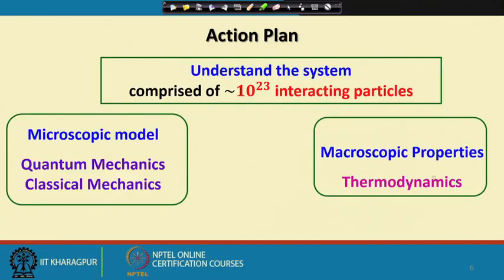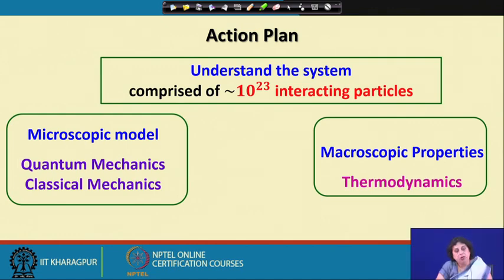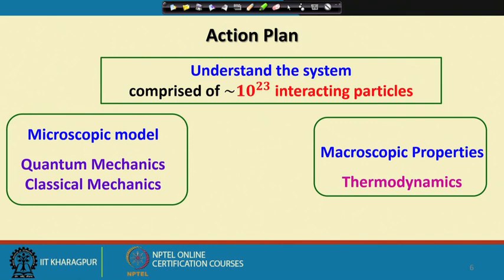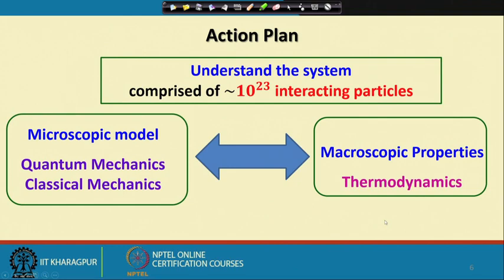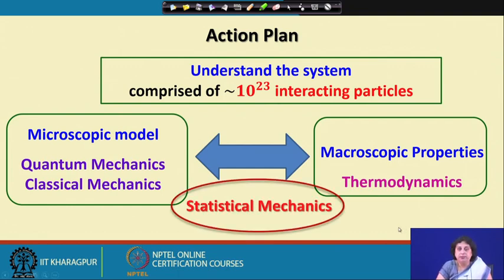On the other end of the spectrum we have the measurable macroscopic properties that we always measure in laboratories. Here the description is fairly standardized and we use thermodynamics to describe the system properties at this level of understanding. The question is: how do I connect the two limits? This connection is well known to be provided by the branch of physics known as statistical mechanics.